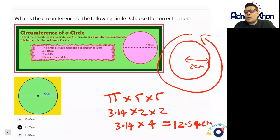So the measurement all the way around this particular circle, all the way from here, all the way there, again this is the circumference, is going to be 12.54 centimeters.